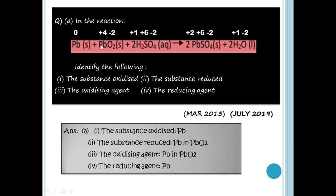So Pb is equal to oxidation number x = +4. Now for H2SO4: hydrogen is +1 and oxygen is -2, so we solve for sulfur. Hydrogen has 2 atoms and oxygen has 4 atoms.